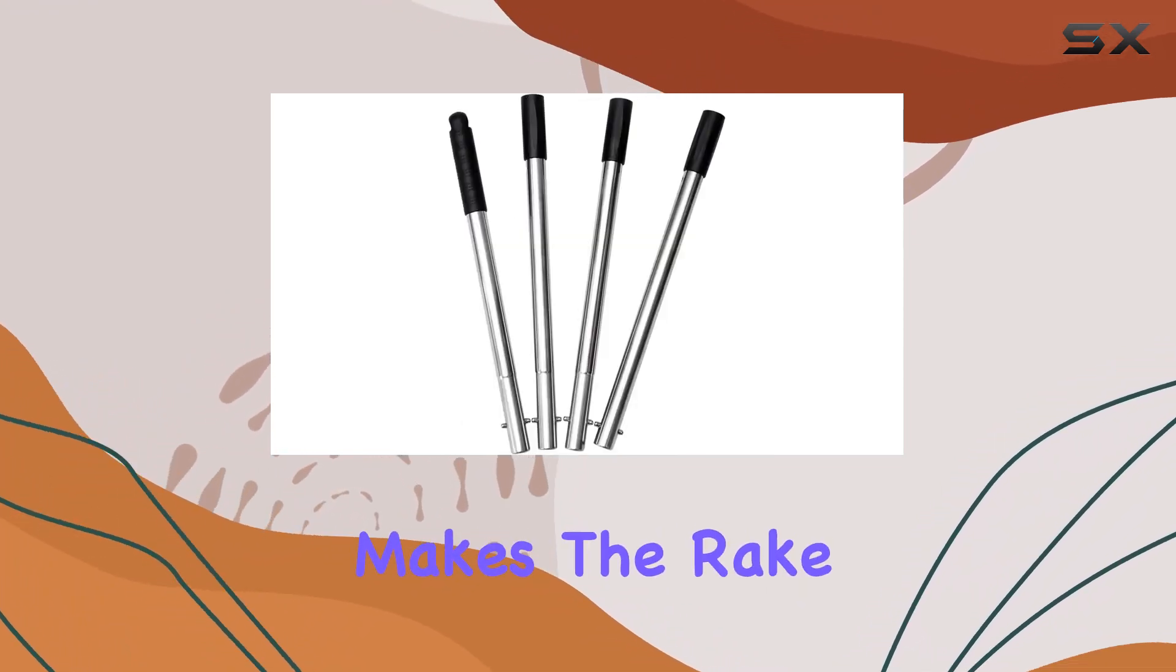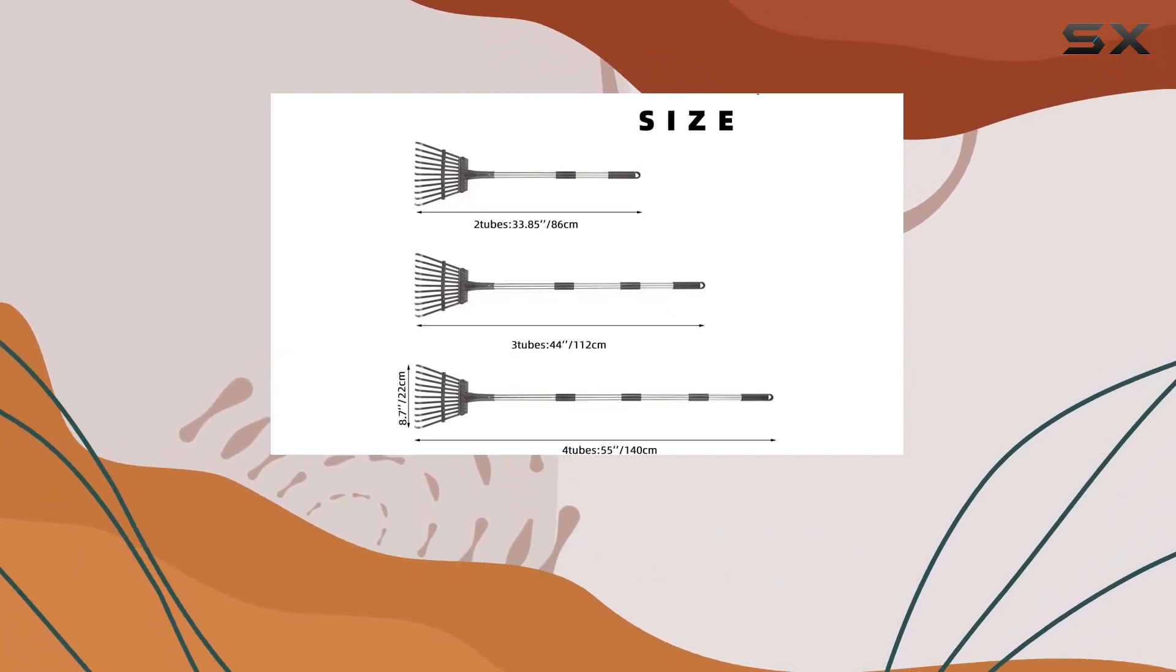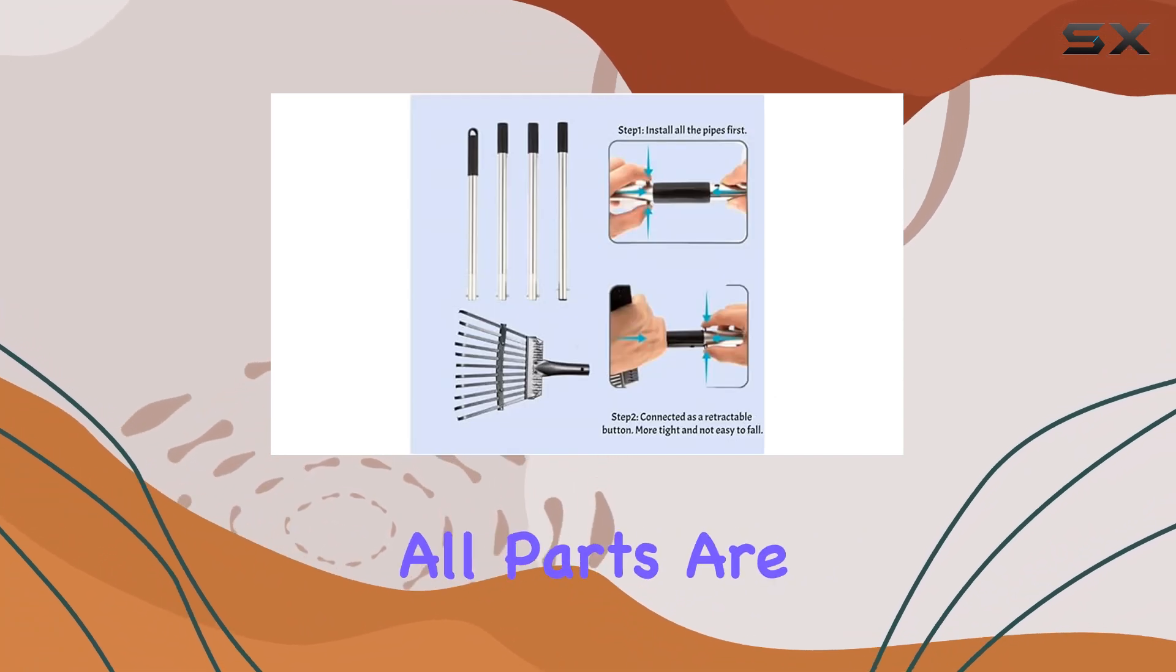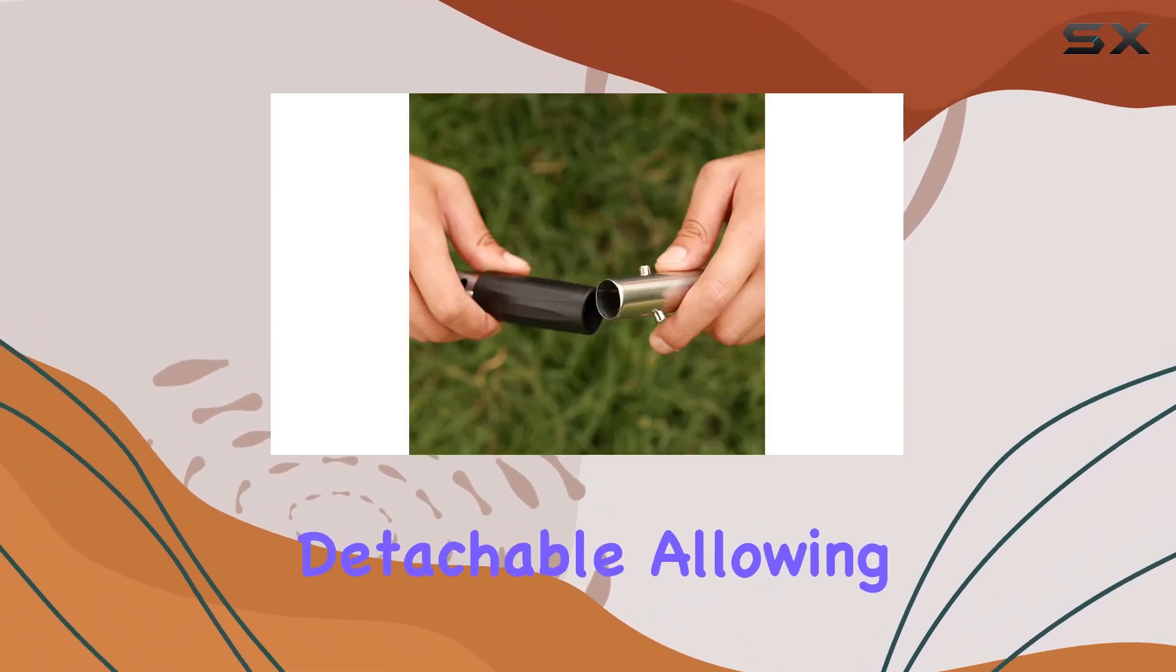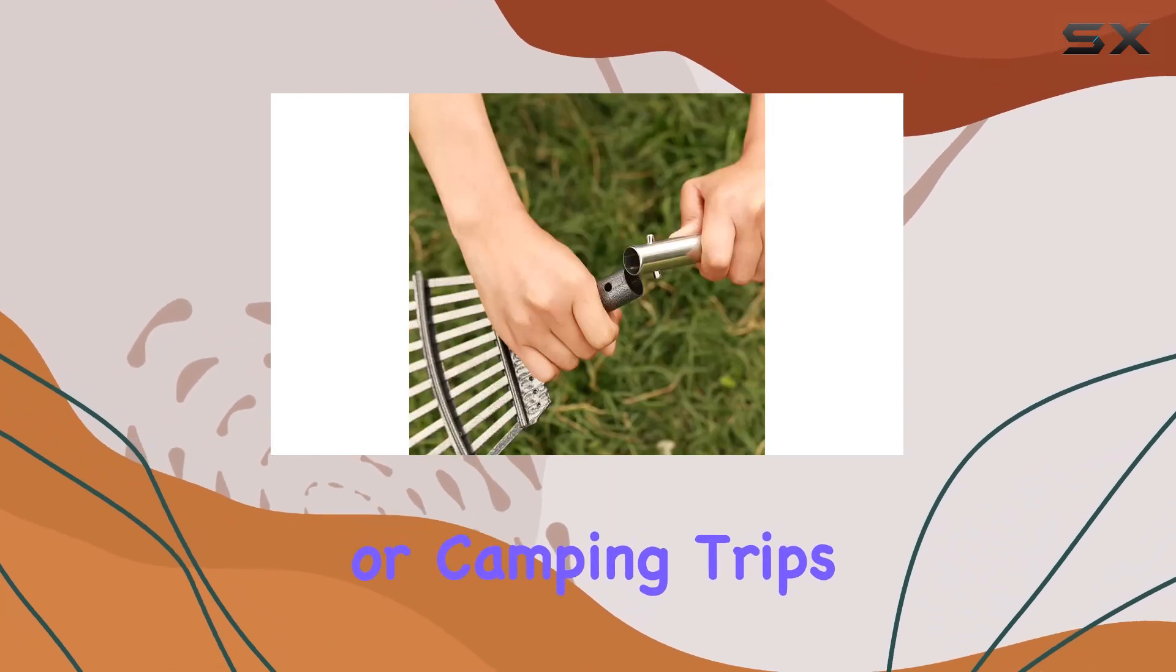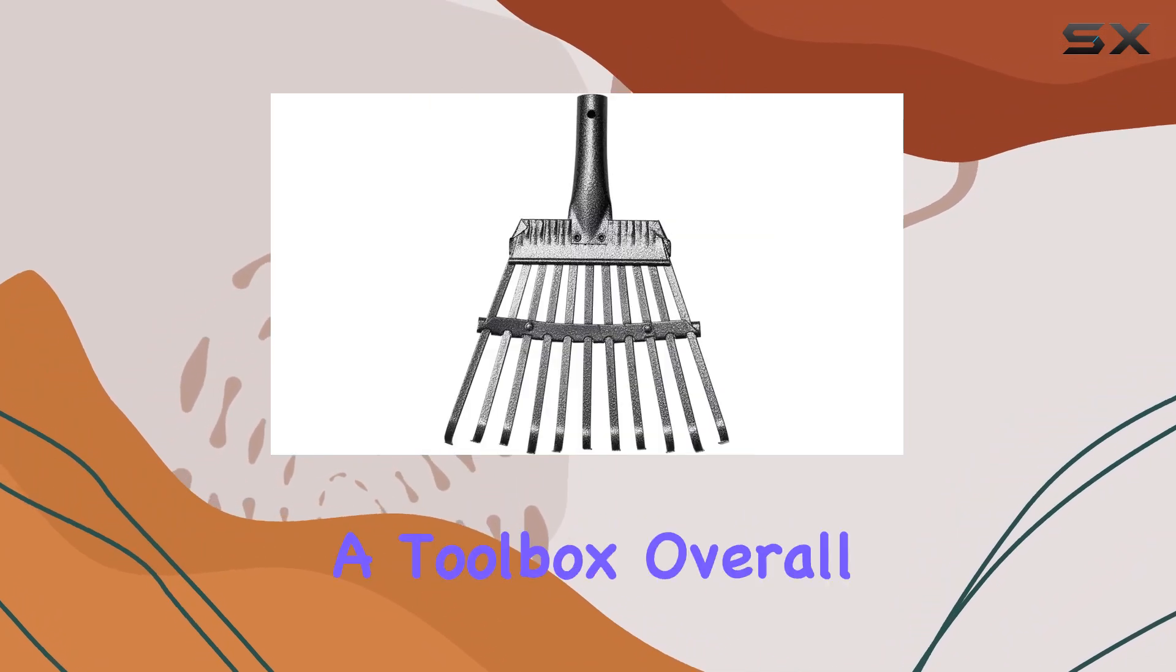This feature also makes the rake easy to disassemble and store, which is ideal for those with limited space. For added convenience, the rake is lightweight and portable. All parts are detachable, allowing you to pack it into your backpack for outdoor activities or camping trips. When not in use, you can hang it up to save space or store it in a toolbox.